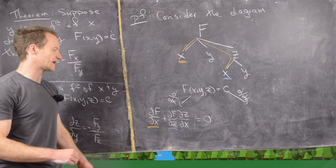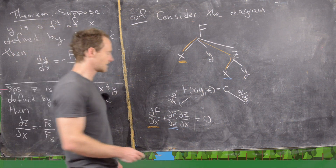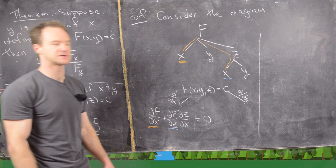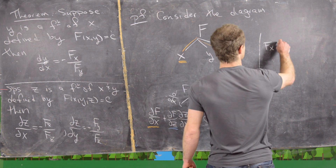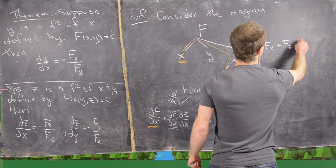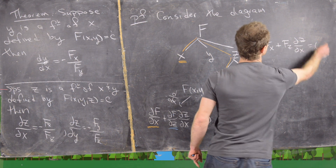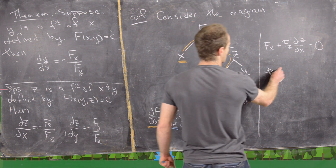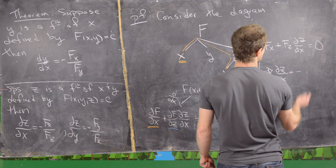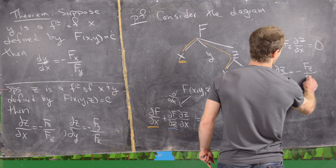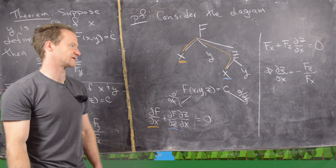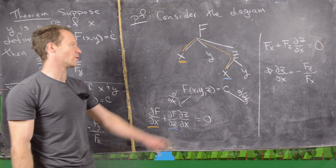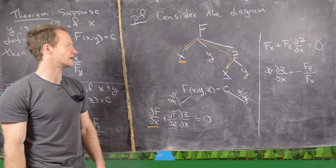Now we have an equation we can solve for the partial of z with respect to x. Using friendlier notation, this is: F_x plus F_z times (∂z/∂x) = 0. Solving, we get ∂z/∂x = −F_x / F_z, provided the partial of F with respect to z is not zero. The partial of z with respect to y is handled the same way, except we differentiate along the path through the variable y instead of x.